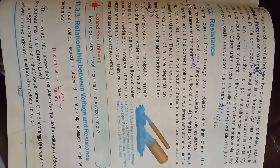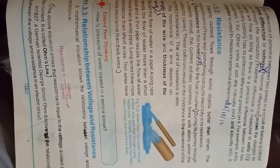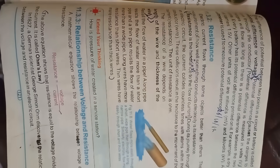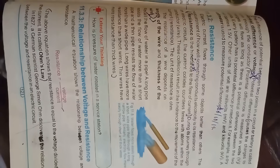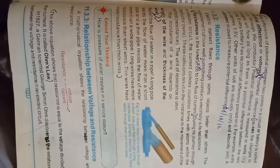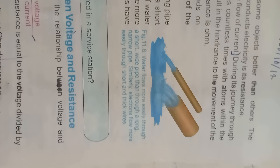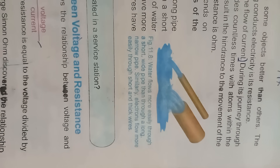Resistance: electric current flows through some objects better than others. Resistance is a hindrance to the flow of current. During its journey through the electric circuit, the current encounters collisions with atoms, which result in hindrance to movement. The unit of resistance is the ohm. The resistance of a wire depends on the length and thickness of the wire. Electrons flow more easily through short and thick wires, similar to water flowing more easily through a short, wide pipe.